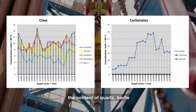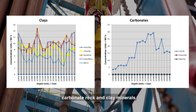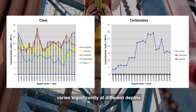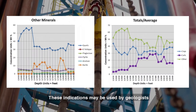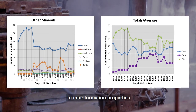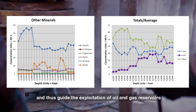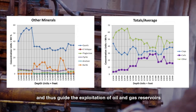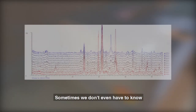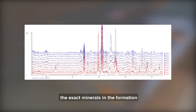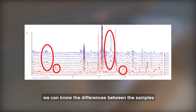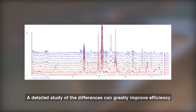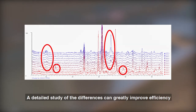In this drill example, the content of quartz, pyrites, carbonate rock, and clay minerals varies significantly at different depths. These indications may be used by geologists to understand formation properties and guide the exploitation of oil and gas reservoirs. Sometimes we don't even need to know the exact minerals. By comparing the XRD patterns in a pattern stack, we can identify the differences between samples, and a detailed study of those differences can greatly improve efficiency.